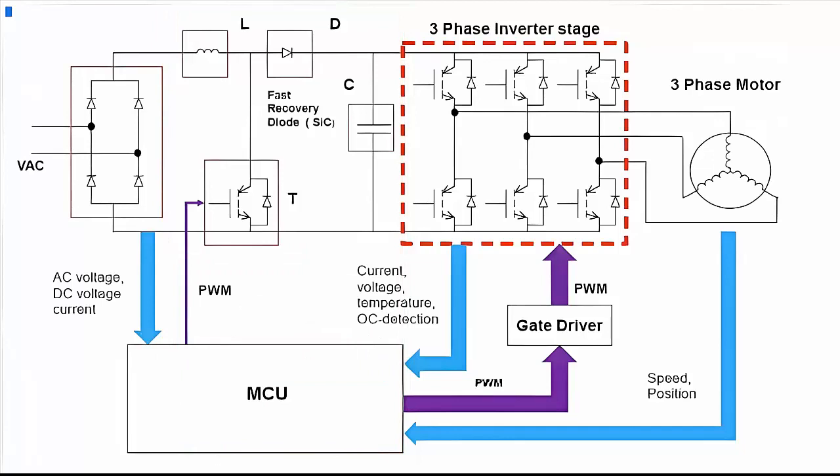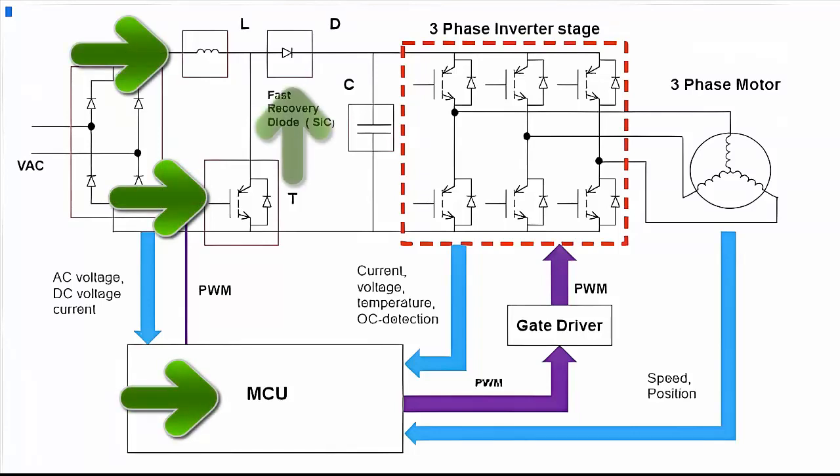The PFC circuit, or power factor correction circuit, is basically composed of a controller, a transistor, a coil or reactor, and a diode.